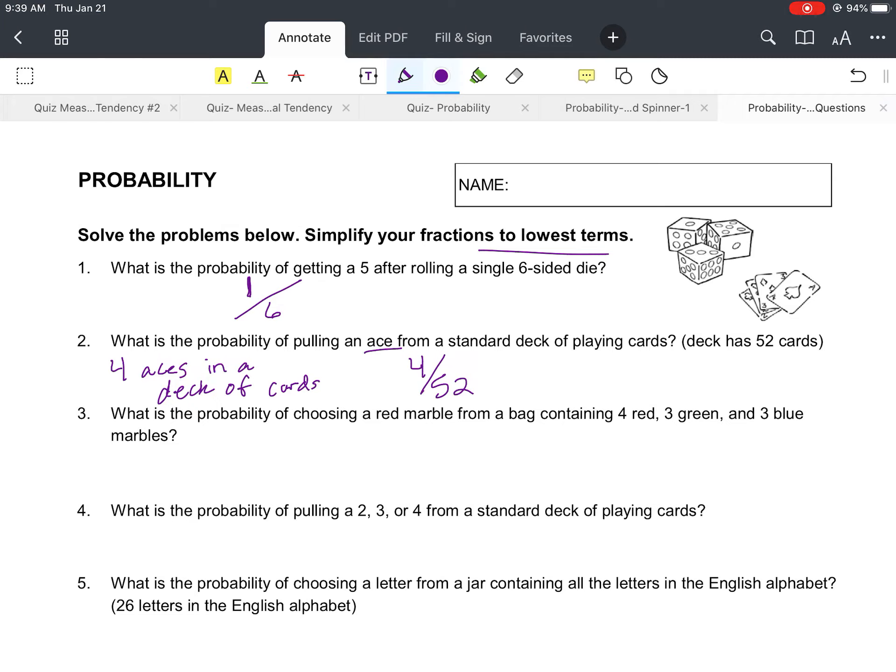And there's four of them, and there's a total of 52 cards. So I'm going to write four out of 52, and again it says simplify to the lowest terms if possible, which we can.